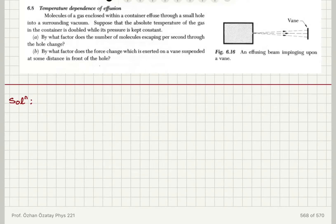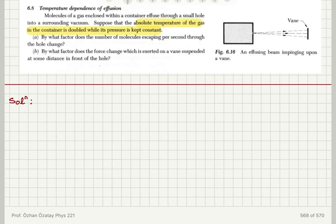This problem concerns the temperature dependence of effusion. Molecules of a gas enclosed within a container effuse through a small hole into a surrounding vacuum. Suppose the absolute temperature of the gas is doubled while its pressure is kept constant. By what factor does the number of molecules escaping per second through the hole change?